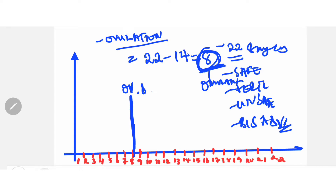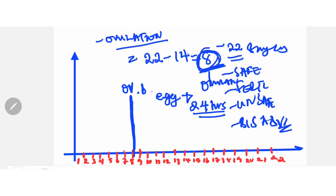Another thing to consider is that once you ovulate, the egg is only viable for 24 hours. So if you want to maximize the chances of conception, you should maximize intercourse around the ovulation date — probably the day before day 8 and on day 8 itself. Conversely, if you want to avoid pregnancy, this is the time you should avoid intercourse, as the chances of conceiving are highest.